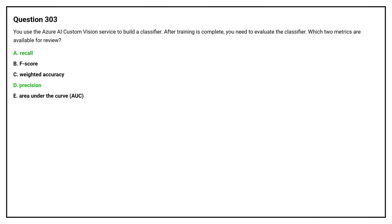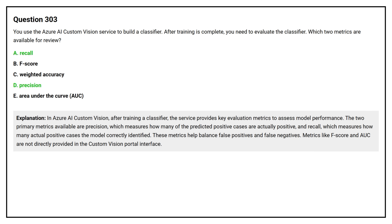The correct answers are Option A: Recall, and Option D: Precision. In Azure AI Custom Vision, after training a classifier, the service provides key evaluation metrics to assess model performance. The two primary metrics available are Precision, which measures how many of the predicted positive cases are actually positive, and Recall, which measures how many actual positive cases the model correctly identified. These metrics help balance false positives and false negatives. Metrics like F-score and AUC are not directly provided in the Custom Vision portal interface.